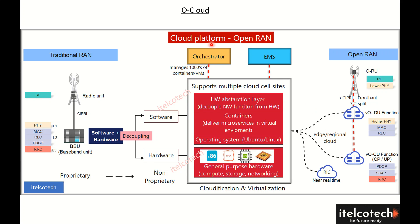Here is the cloud platform and how it looks in the Open Radio Access Network. On the left side is the traditional RAN — a traditional 4G radio access network where we have a black box, which is a baseband unit, connected through the conventional fronthaul to the radio unit. All the different functionalities related to the protocol layers are handled by this single baseband unit.